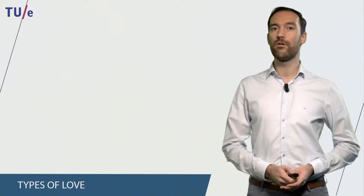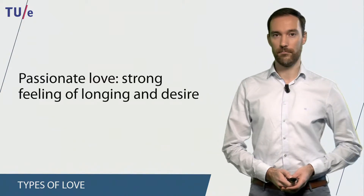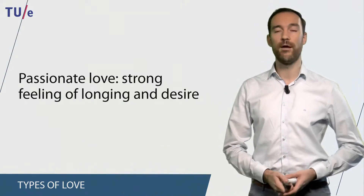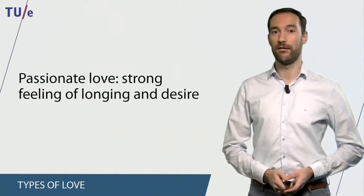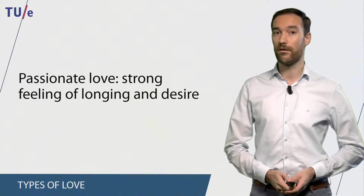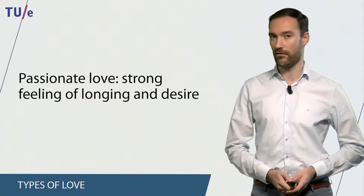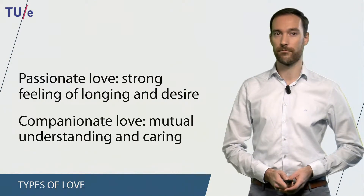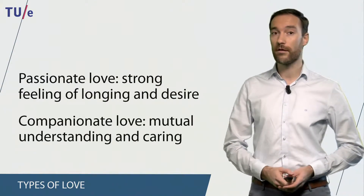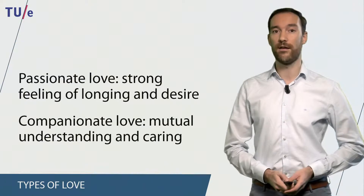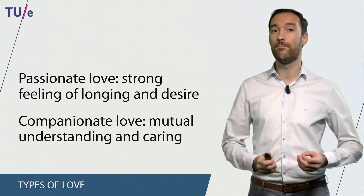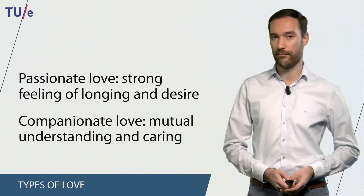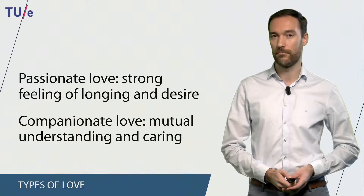Two different types of love exist. The first type is what we call passionate love — a strong feeling of longing and desire for another person. The other type is companionate love, which can be defined as a mutual understanding and caring for the other person.